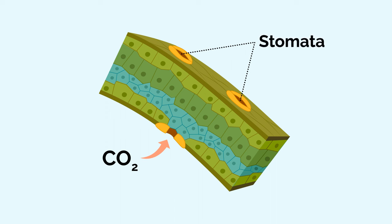Once inside a plant, the carbon dioxide is broken down, and some of the carbon ends up in the chloroplasts.